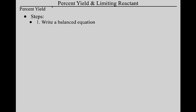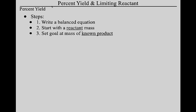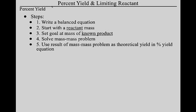When you solve these problems, it's a five-step process. Step one: write a balanced equation. Step two is your starting point — it's the mass of a reactant. Step three is your goal — the mass of what we call the known product, the one we collected. Step four: solve the mass-mass problem. Step five: use the result of that mass-mass problem as the theoretical yield in a percent yield calculation.